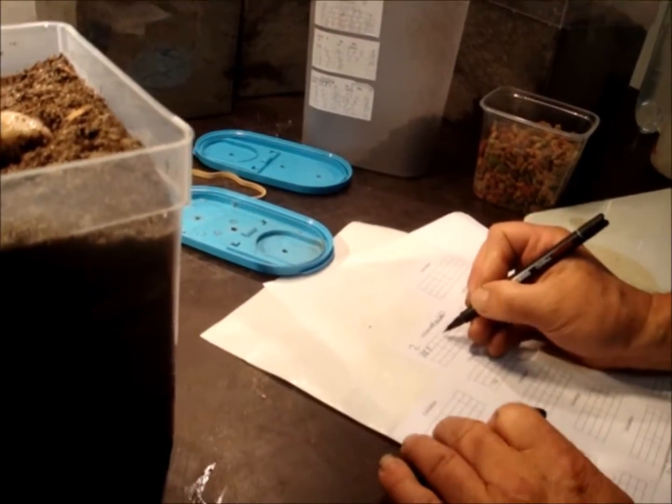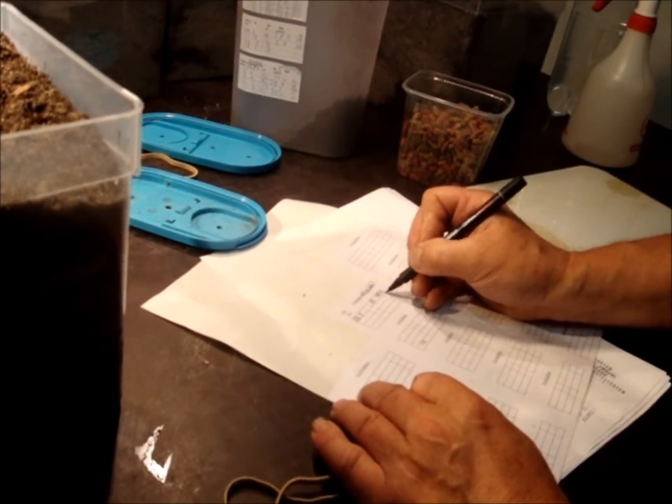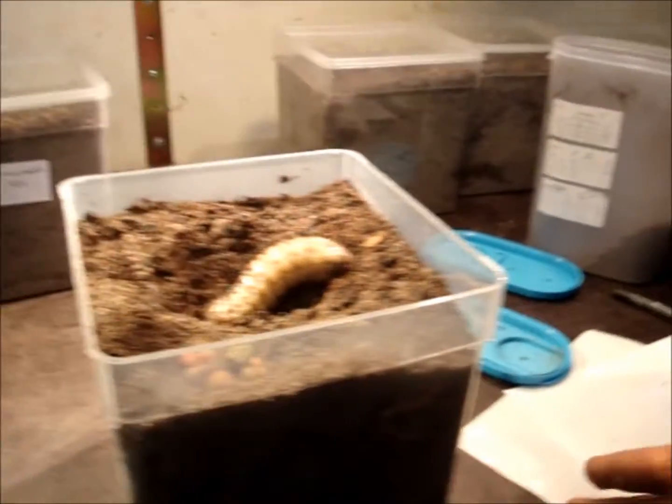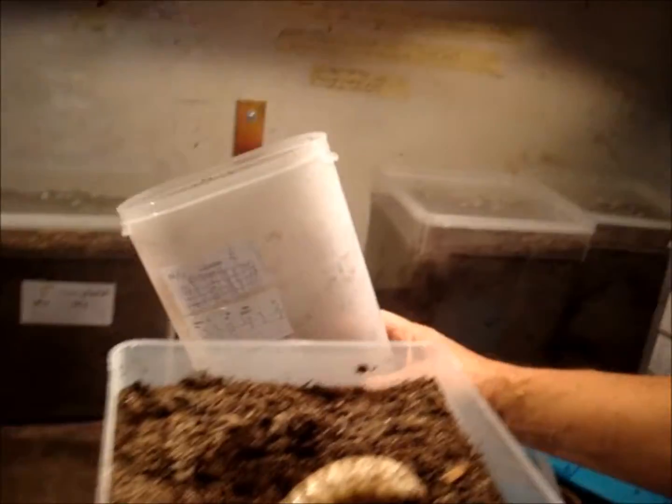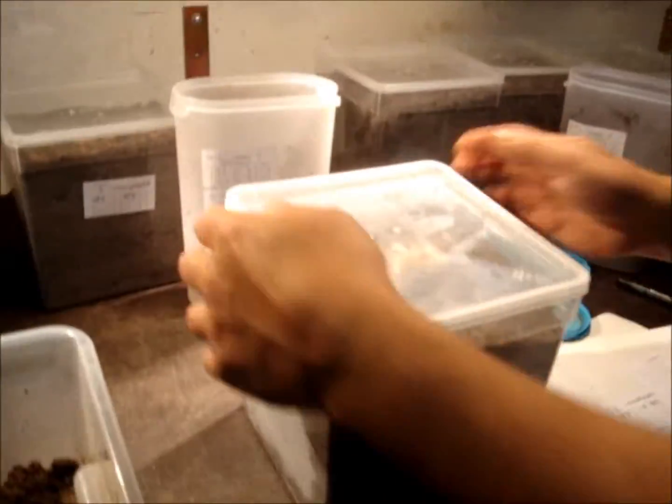This one might eat some more. 44 grams, some more of these cat food pellets. Because the last time I noticed I put in 12 and I didn't see any anyone around here. So if you look through the substrate you don't see any leftovers. So that's good. Let's put some more.